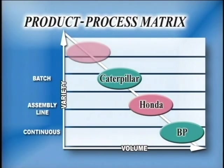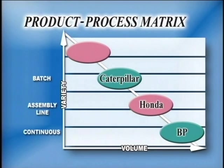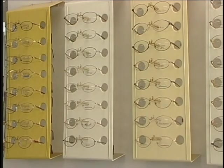Sometimes, products are created in batches as small as one. When a highly specialized product is needed in a very low volume, based on an individual customer order, the process which matches the product is often referred to as a job shop. Eyeglasses are made using such a job shop process. Each pair is made to suit a specific customer's vision and head shape, so each pair must be created individually.